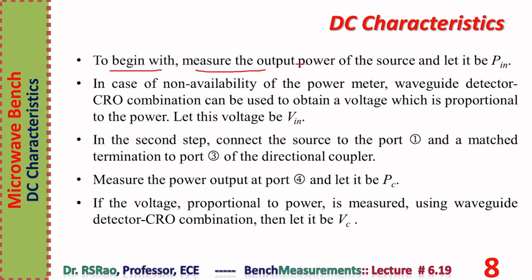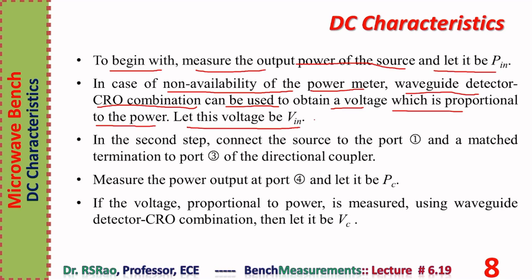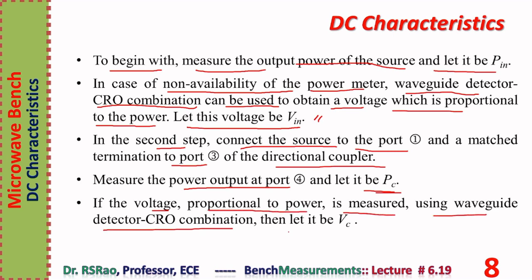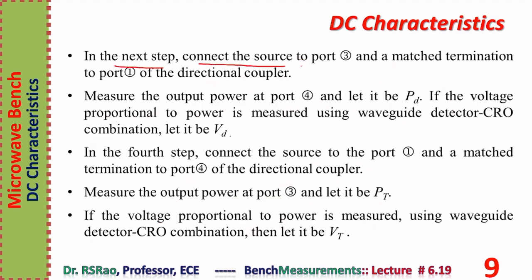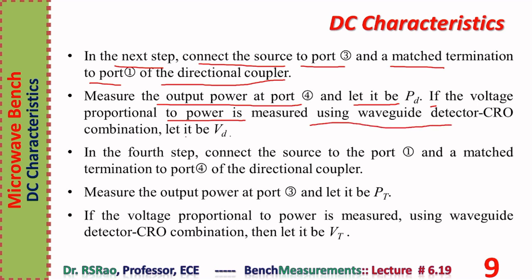Begin by measuring the output power of the source and let it be P_in. In case of non-availability of a power meter, a waveguide detector and CRO combination can be used to obtain a voltage proportional to power, called V_in. In step two, connect the source to port one and a matched termination to port three of the directional coupler. Measure the output power at port four and let it be PC (or voltage VC). In step three, connect the source to port three and a matched termination to port one. Measure the output power at port four and let it be PD (or voltage VD).